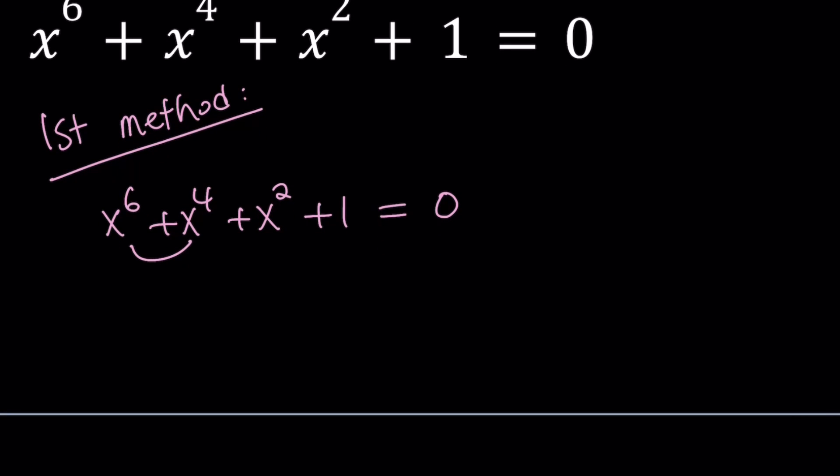I notice these two terms have a common factor and these two terms have a common factor. The first group is x^4 times x^2 plus 1. The second group having no common factors besides 1 is going to be 1 times x^2 plus 1.